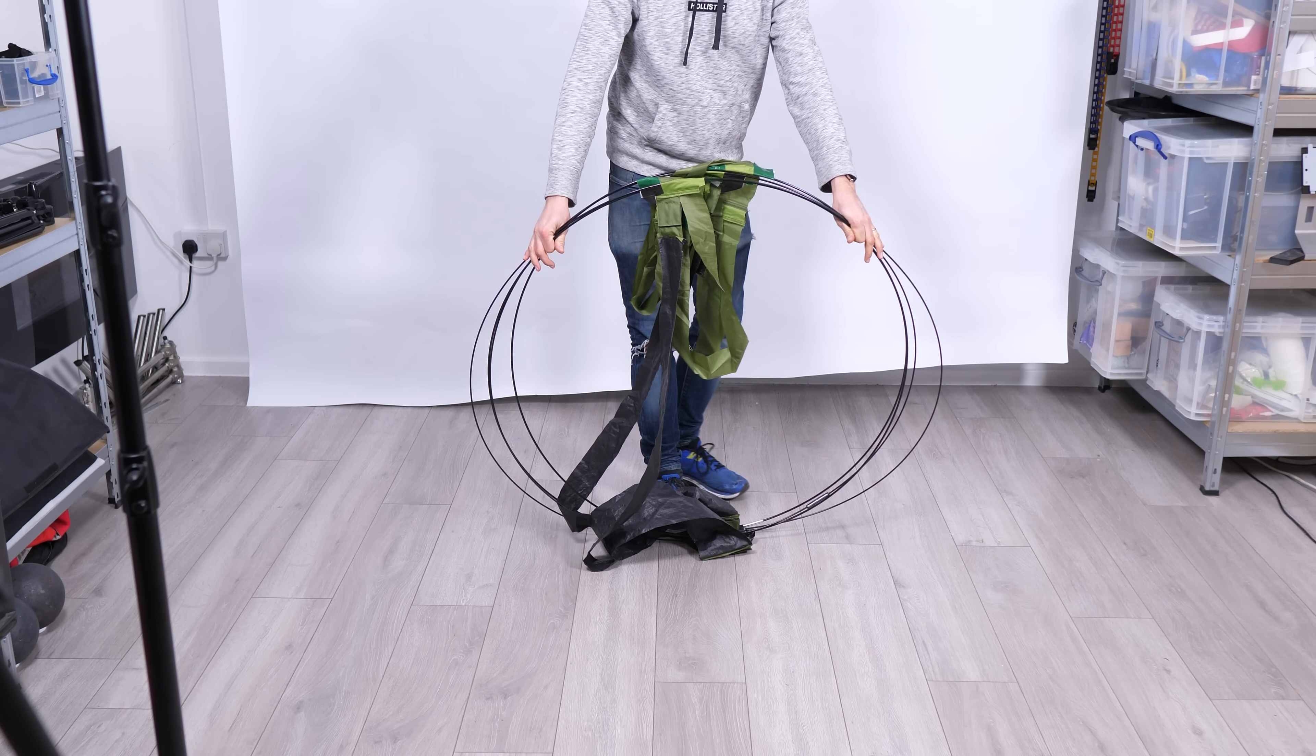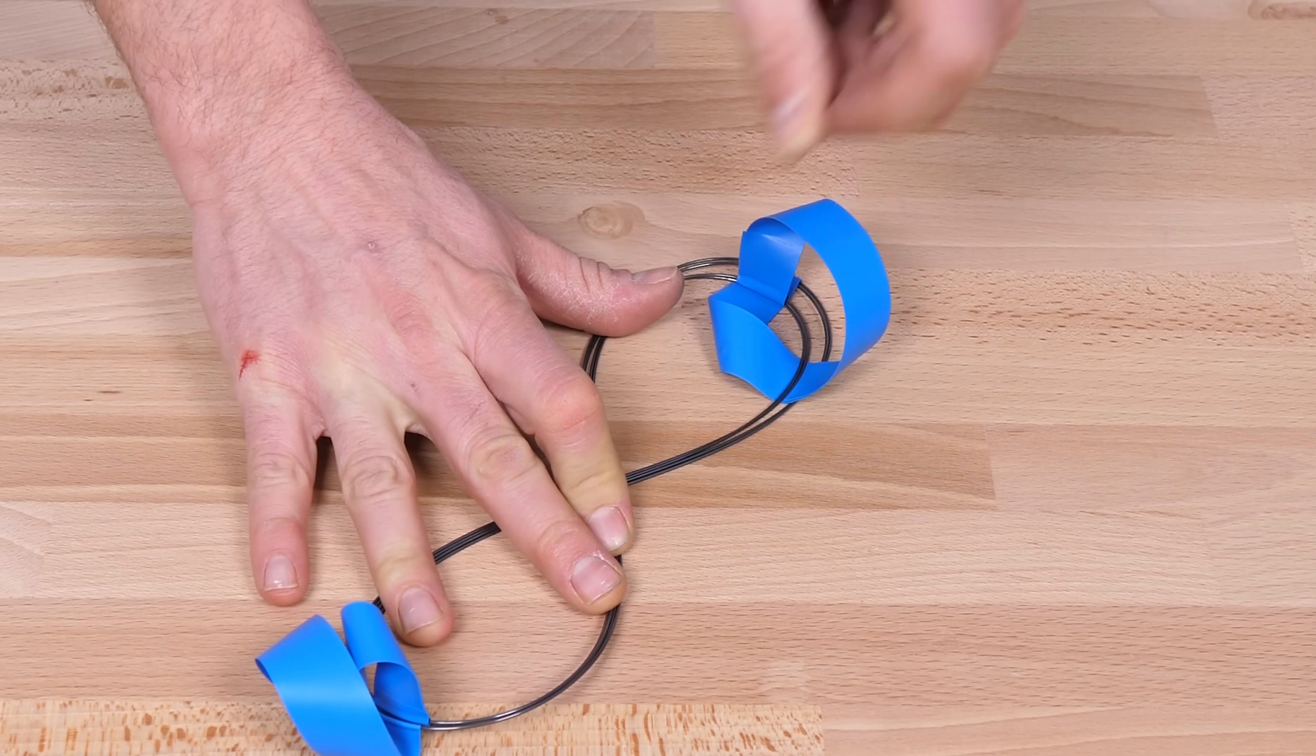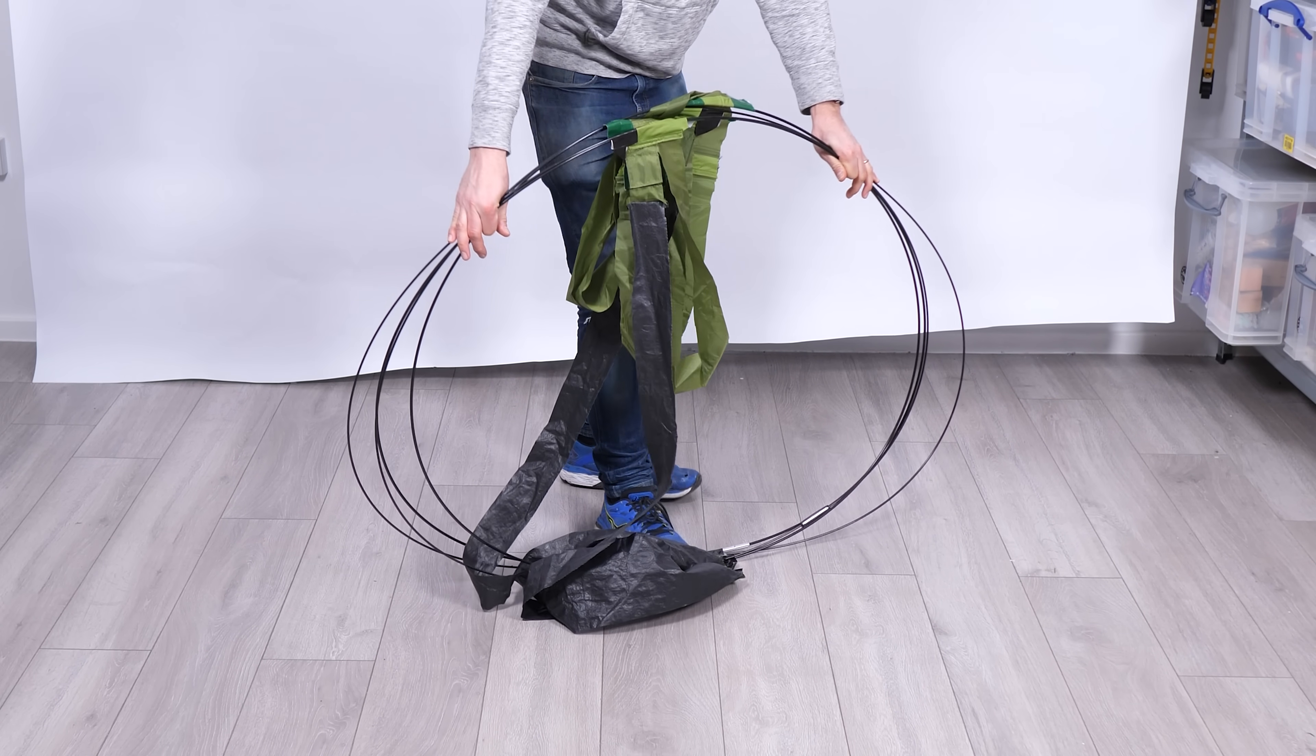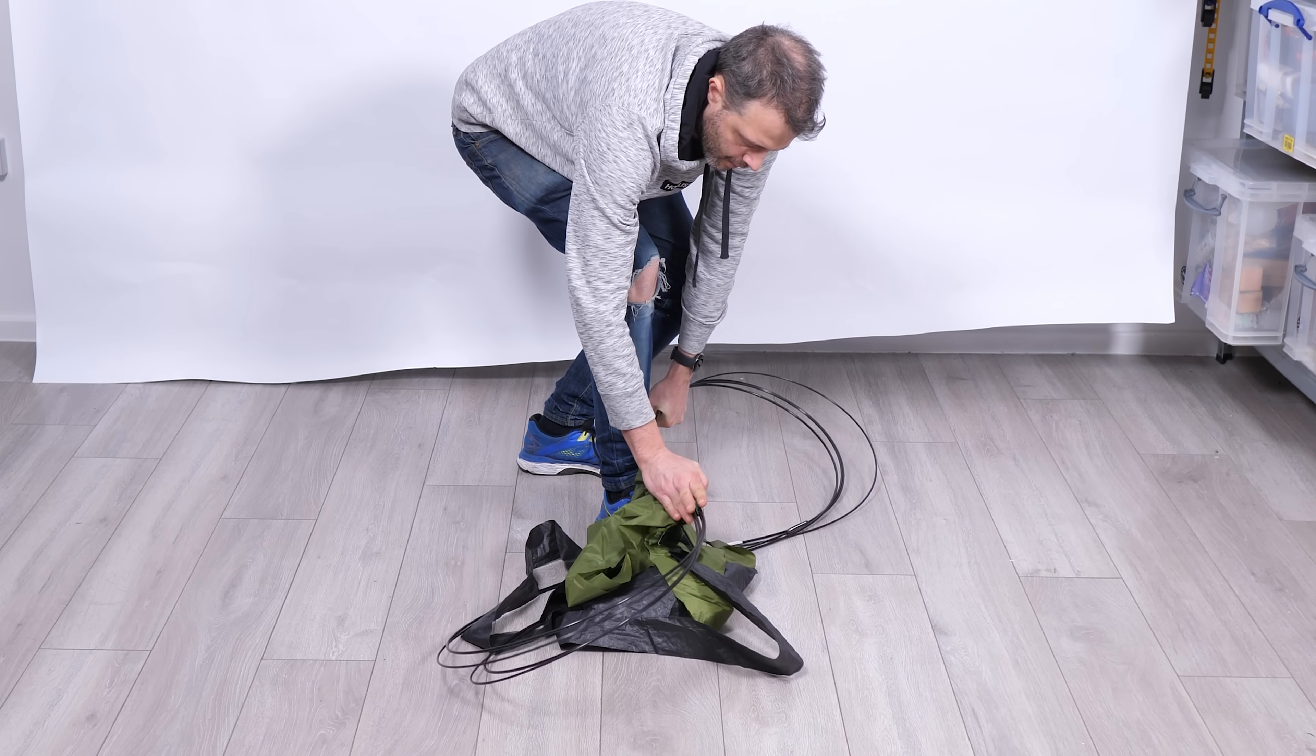And in fact, there's a second step, which I'll demonstrate on the model. You push down and twist like this, and then you fold over. Here it is on the full-sized one, and again, you're introducing another full twist.